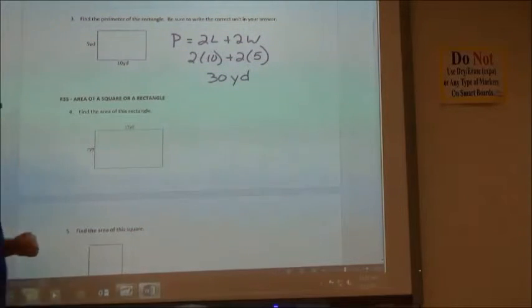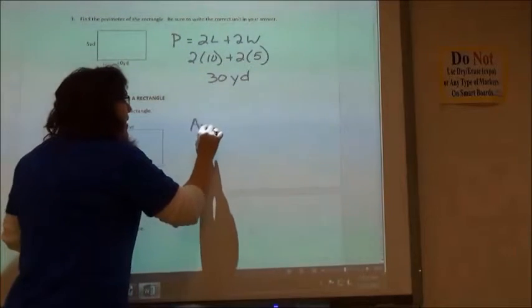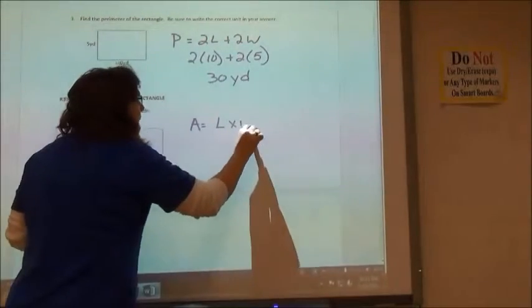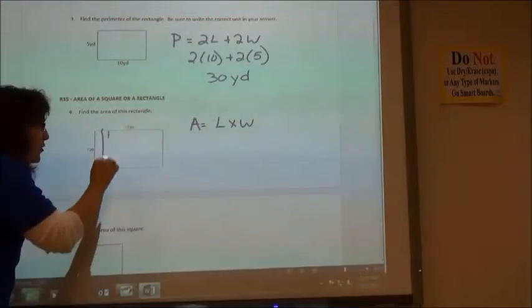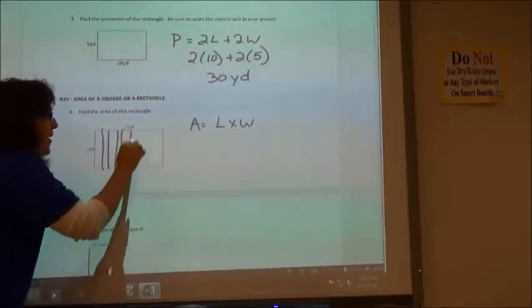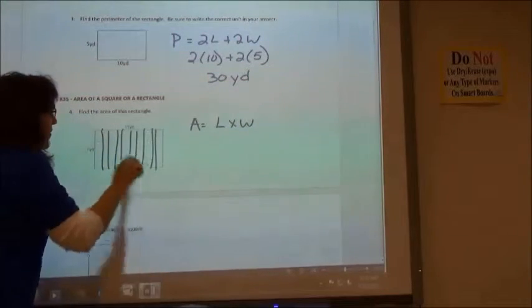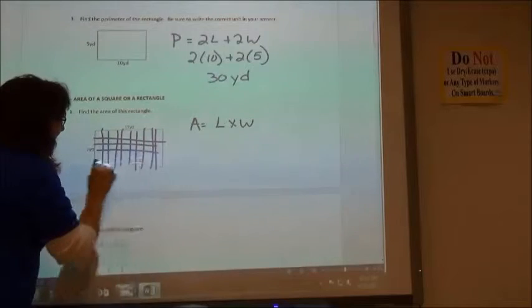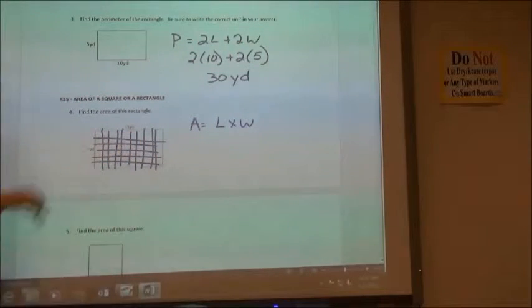In this case, when we find area, that area is going to be the length times the width. Because if I made a whole bunch of little squares and made this 13 by 7, we'll pretend it's 13 by 7 when I'm done drawing, something like that, I could find all the squares in there.